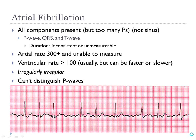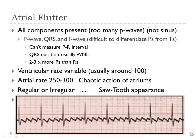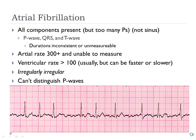You can distinguish AFib from AFlutter: AFlutter is regular, AFib is irregular. This rhythm is called irregularly irregular — one of the few rhythms described that way. If I put that on a test and say the patient is in an irregularly irregular rhythm, it should pop into your head: probably either AFib or VFib.